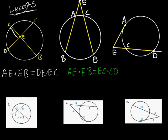This last one, for this one it ends up being a little bit strange. It ends up being EA squared ends up equaling EC times ED. So this tangent line squared will equal this line times this line.